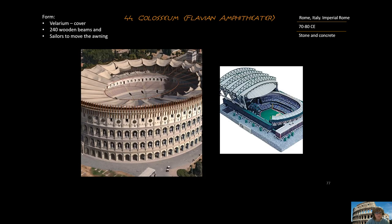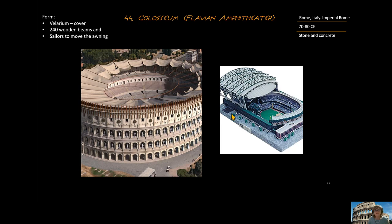Finally, there is the velarium — a cover over the Colosseum comprised of wooden beams. Since Rome was near the coast, sailors from the Roman Navy worked the velarium to protect the crowd from the beating-down sun. Similarly, the velarium at Safeco Field is used in about 11% of games. It takes about 15 to 20 minutes to move that roof, and if it's covering the field at the start of the game, they can't move it off.